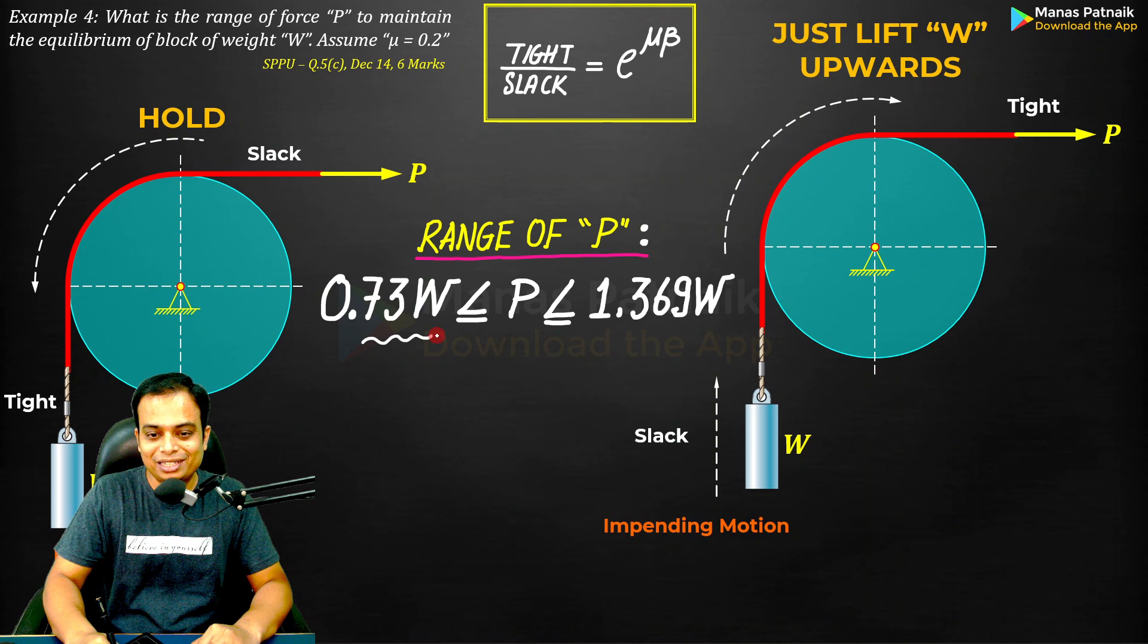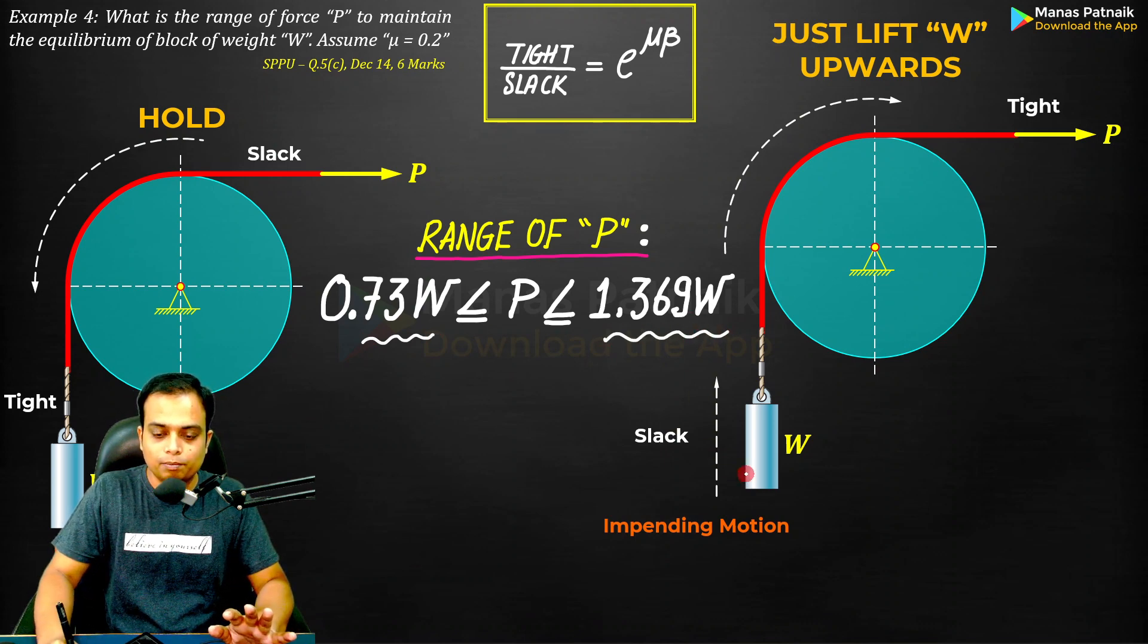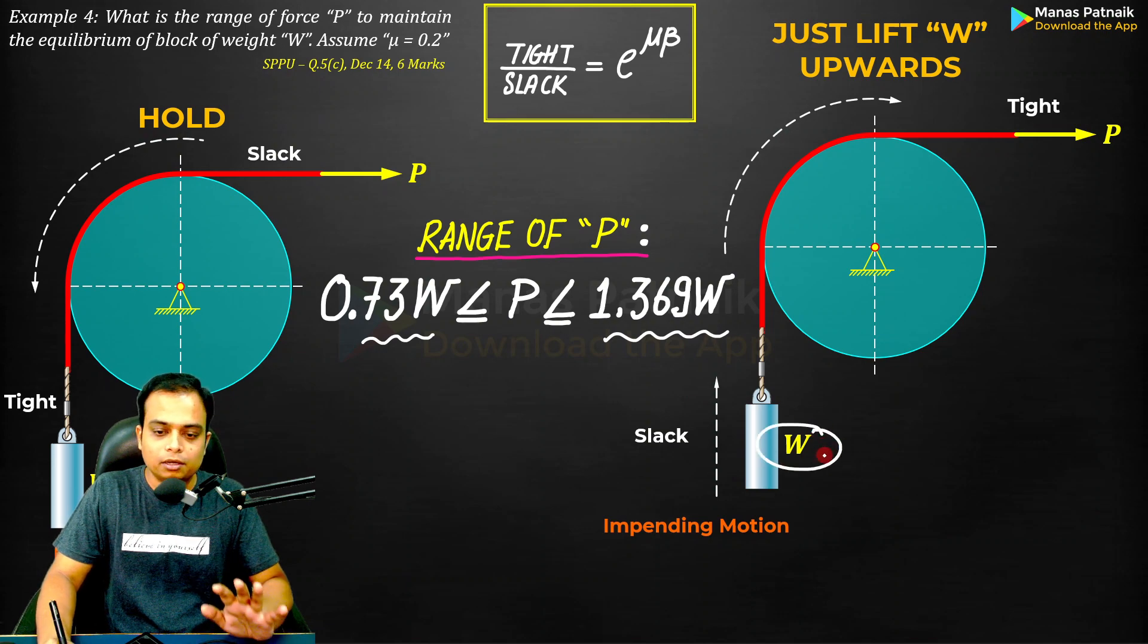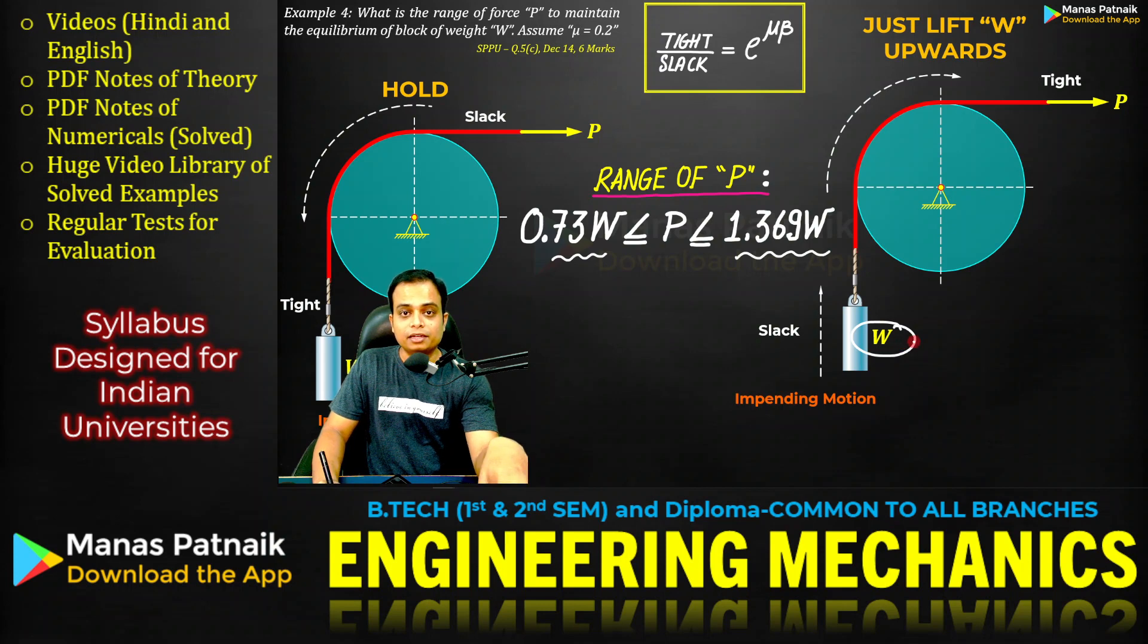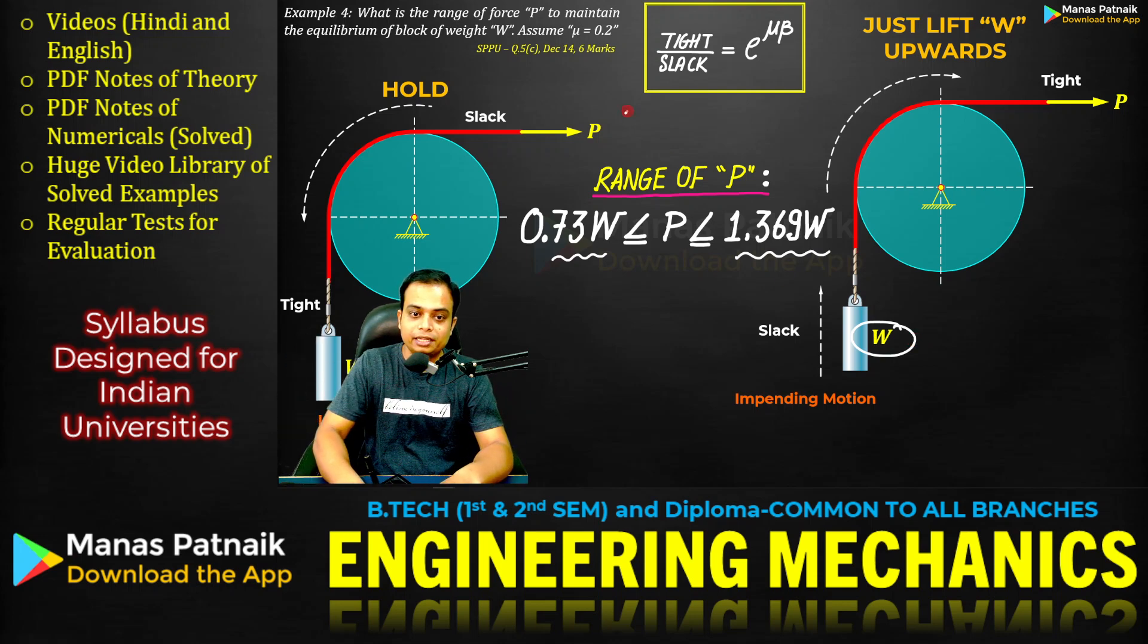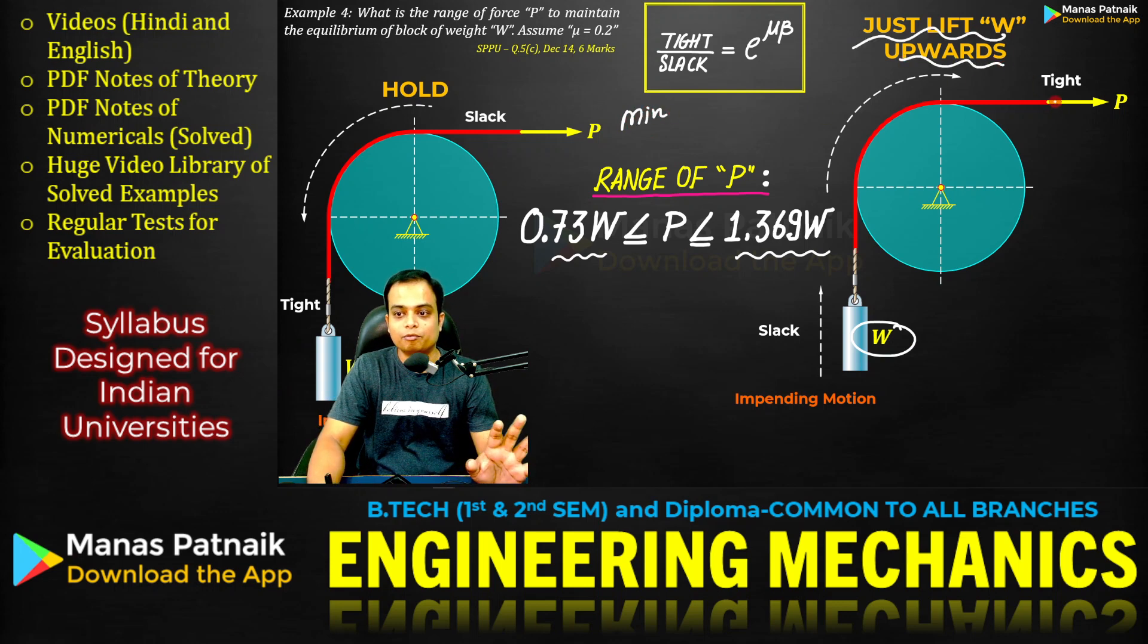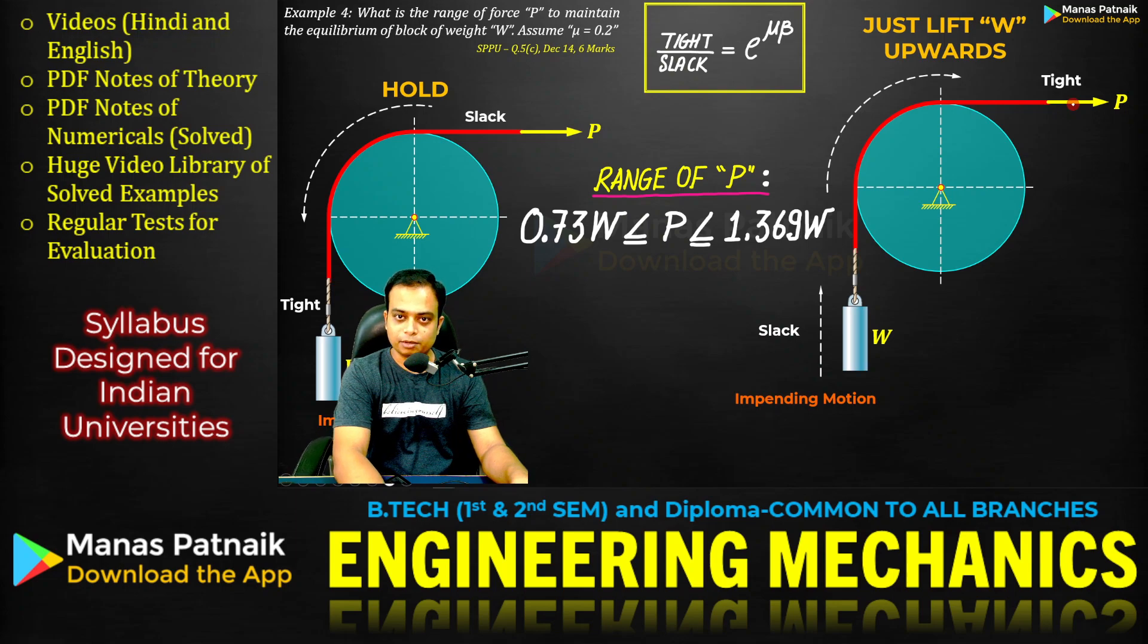When you combine both the results, this is exactly what you are going to get. Any value which falls between 0.73 and 1.369, the system will stay in equilibrium. Block W is not going to move. I hope all of you have understood this very nicely. Remember, whenever you need to get the range, always split up the question into two parts. One is the hold case where you're going to get the minimum value. The other is the just lift case where you're going to get the maximum value. This is how you can make your task easier. Thank you very much.